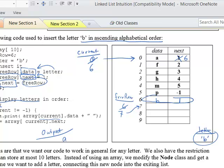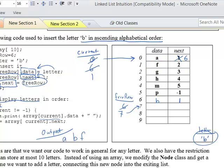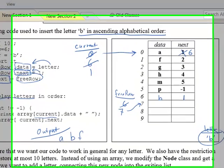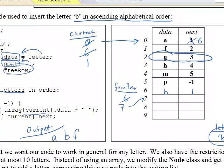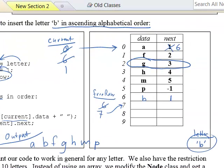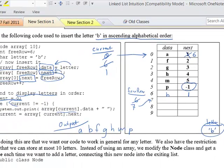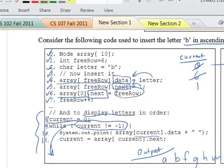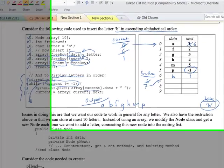Current is now 6, taking us to the 7th row — index value 6 — and we print out B. Then we take that next value and keep going: print F, then G, then H, then M, then P. At that point, after P we get negative 1 as the next index — we hit our ending condition, exit out of the loop, and we've printed out the letters in order.